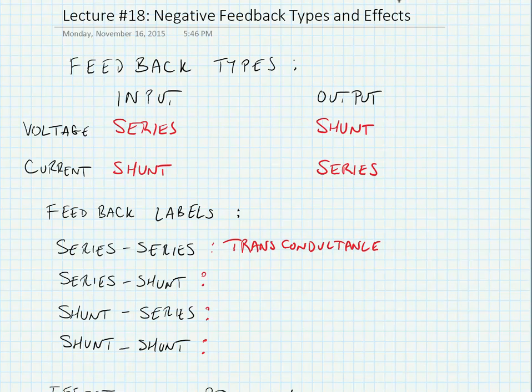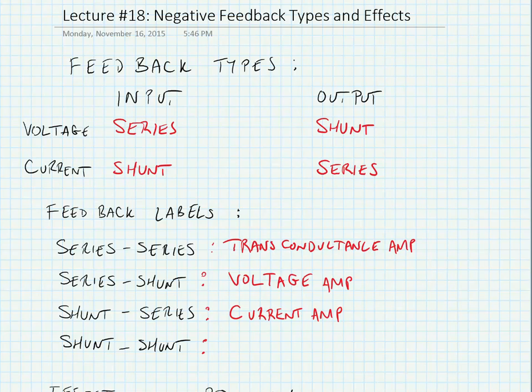Similarly, if we have a series-shunt amplifier, we have a voltage at the input and a voltage at the output — this would be a voltage amplifier. If we have a current at the input and a current at the output, we would have a shunt connection at the input and a series connection at the output. This would be a current amplifier.